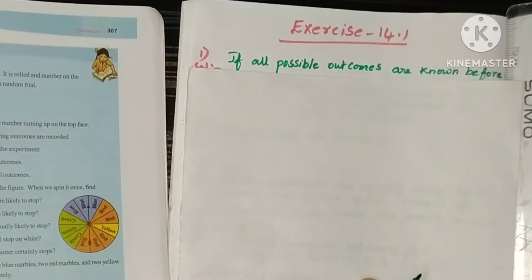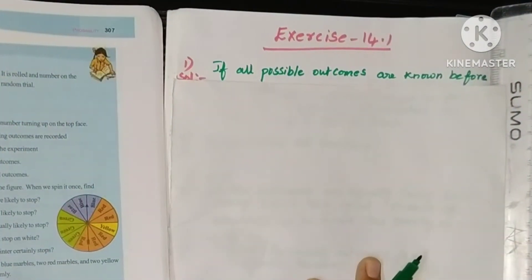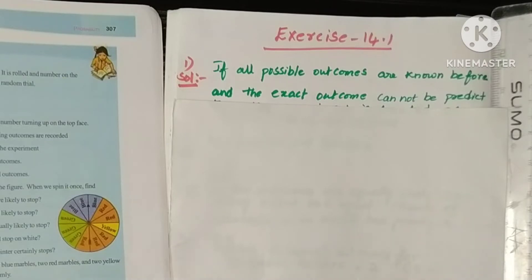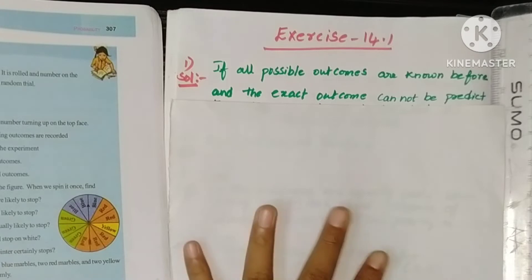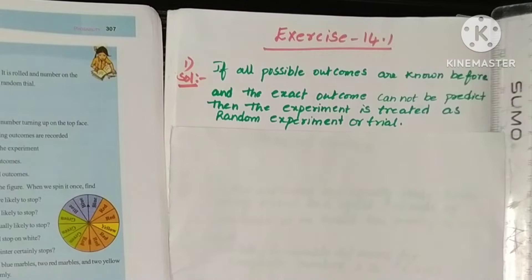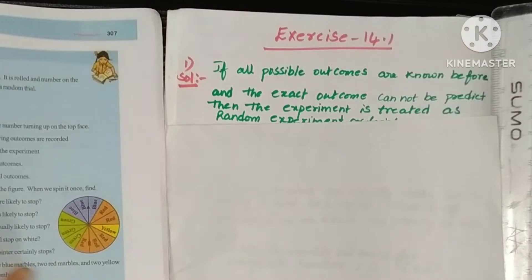If all possible outcomes are known beforehand, and the exact outcome cannot be predicted, then the experiment is treated as a random experiment or trial. So we know all total outcomes beforehand, but at a particular time which outcome will occur cannot be predicted. That's why we call it a random experiment or random trial.